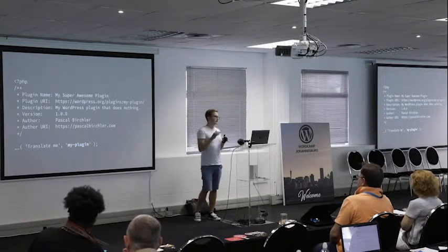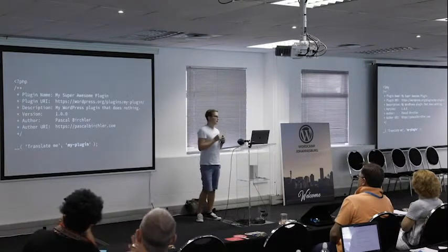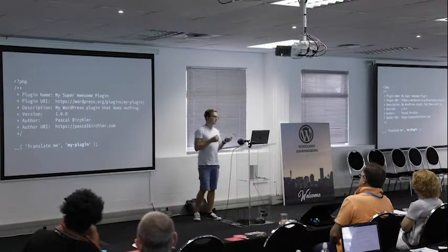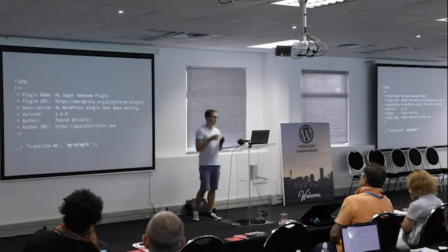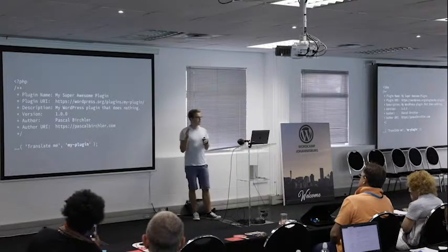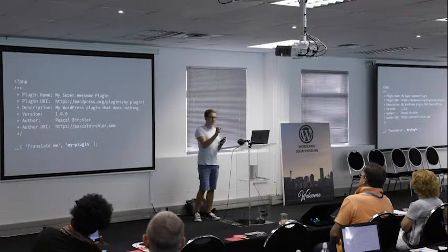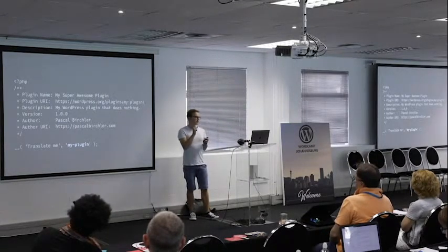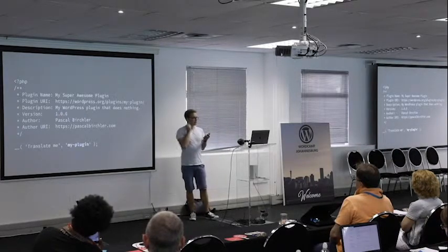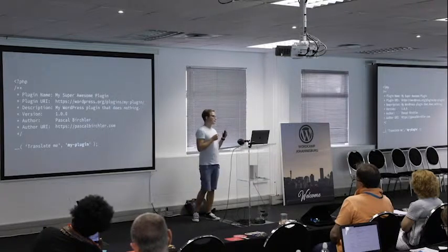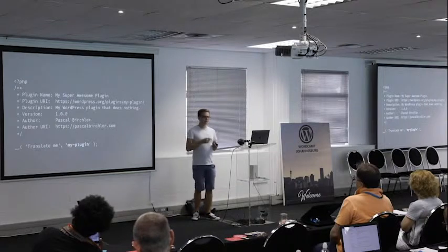The most simple plugin file will look like this — it has some metadata: the plugin name, description, version, and author. At the bottom, for the sake of this example, we have a single string we want to translate. The first part of this function call is the text we want to translate, and the second one is called the text domain. The plugin's text domain is also called my-plugin, the same as the folder name. These two things have to match — that's an important detail.